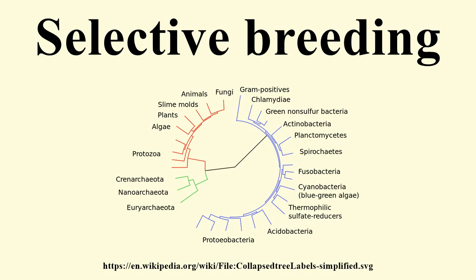In animal breeding, techniques such as inbreeding, line breeding, and outcrossing are utilized. In plant breeding, similar methods are used.